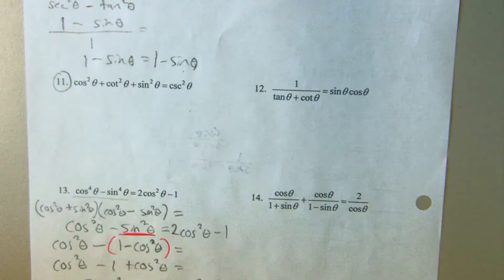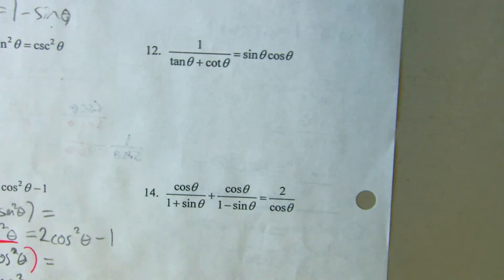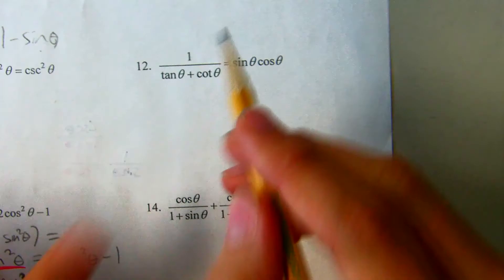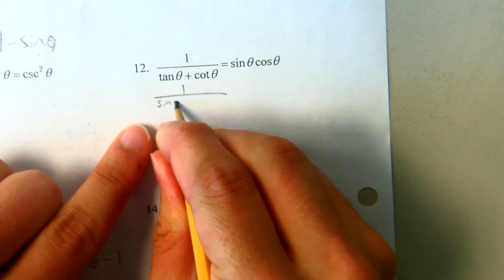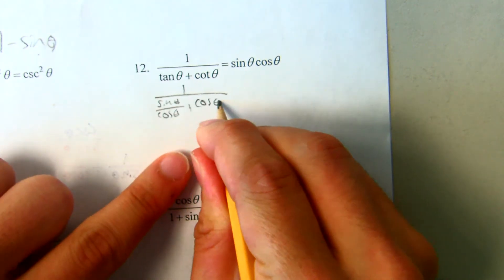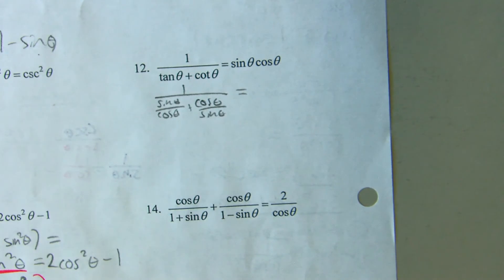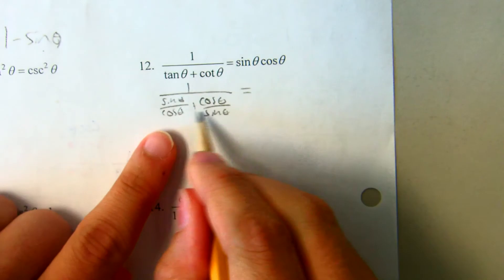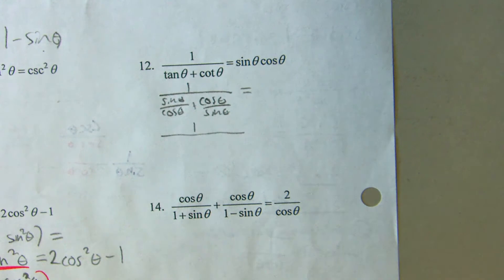So I think in this question, if you don't see anything else to do — and please don't do this too quickly, people do this too quickly sometimes because it makes it way too hard — you can change everything into sines and cosines. I'm not sure what else to do, so I'll try to add these fractions together. Now I hope that works out well for me.